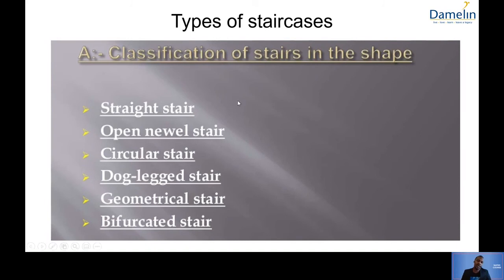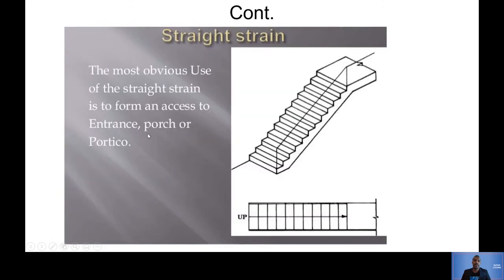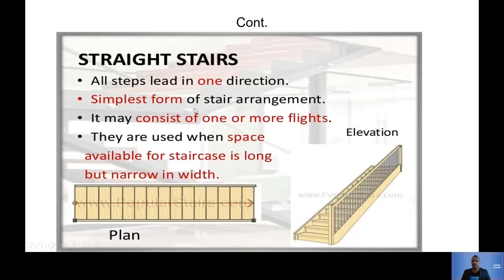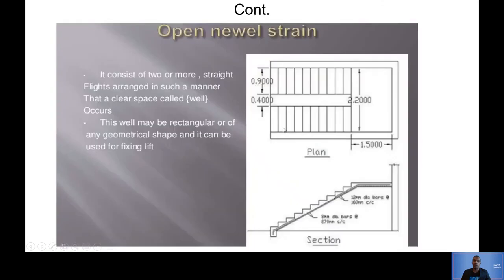Now here is a classification of the types of stairs. We have straight stairs, open newel stairs, circular stairs, dog-leg stairs, geometrical stairs, and bifurcated stairs. Most stairs you've probably seen are straight stairs.